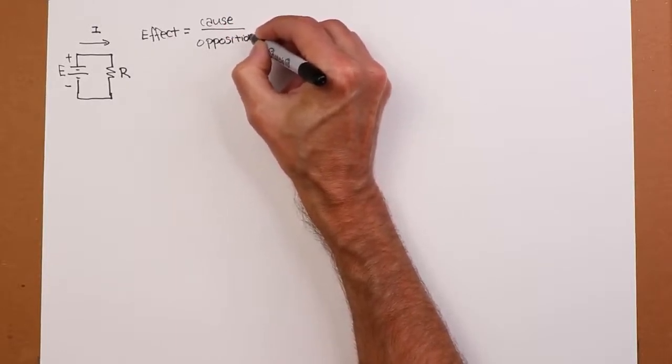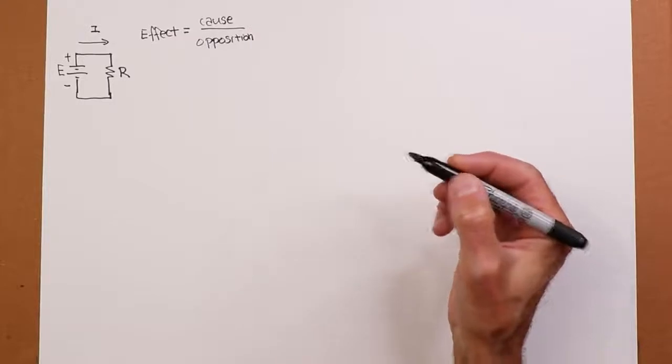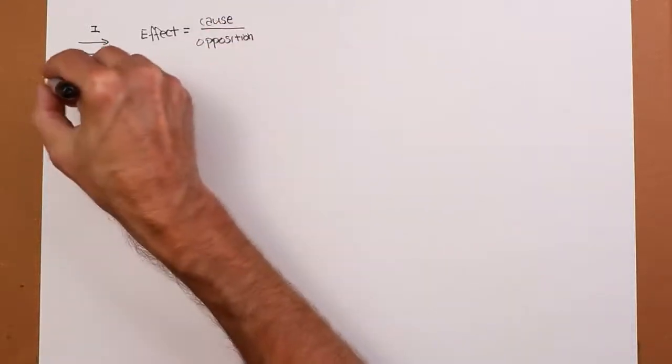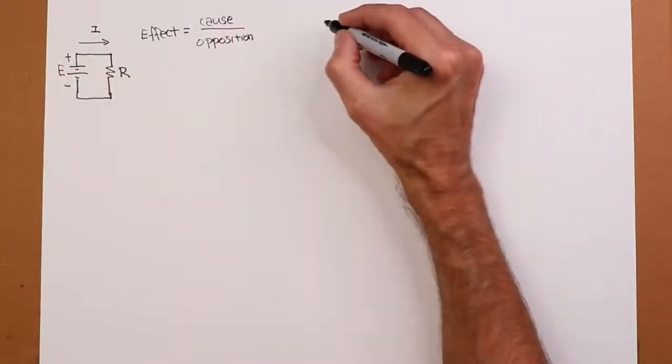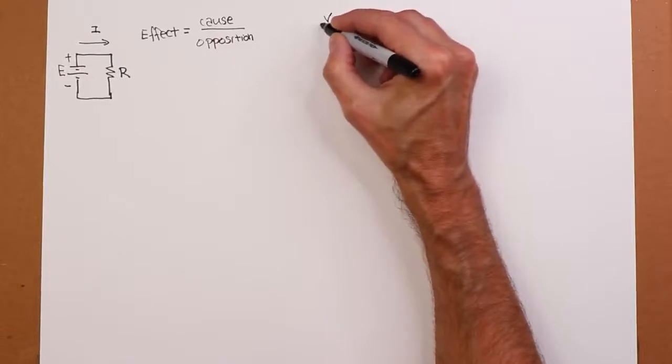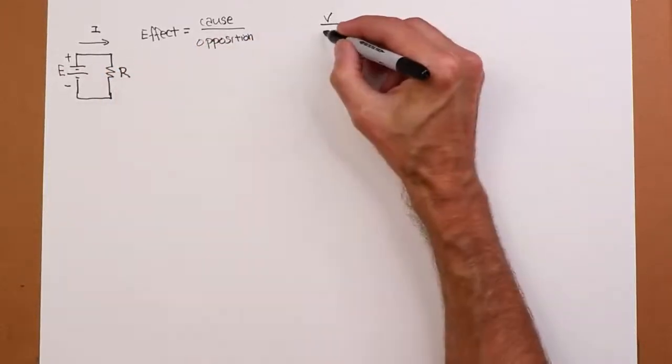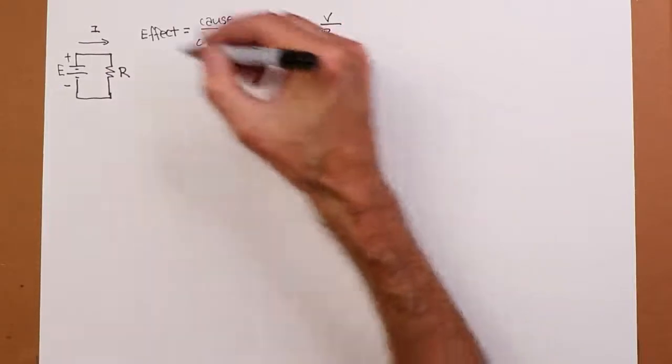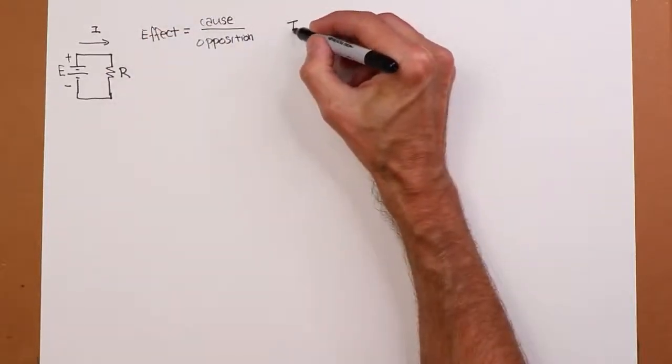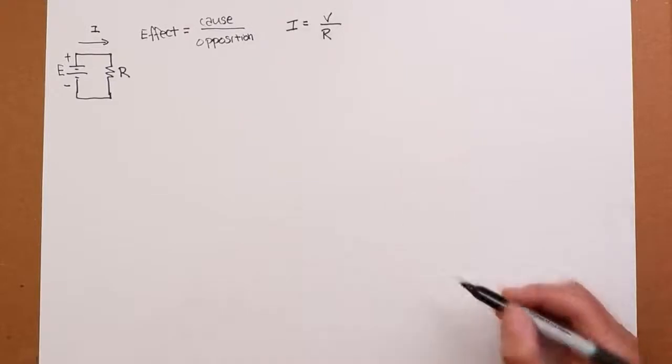In our case, that means cause E voltage, opposition is resistance aptly named, and the effect is the current. I is equal to V over R.